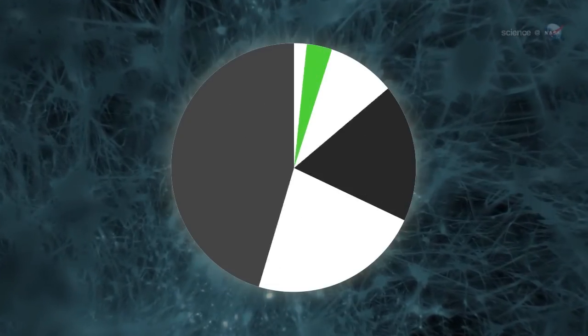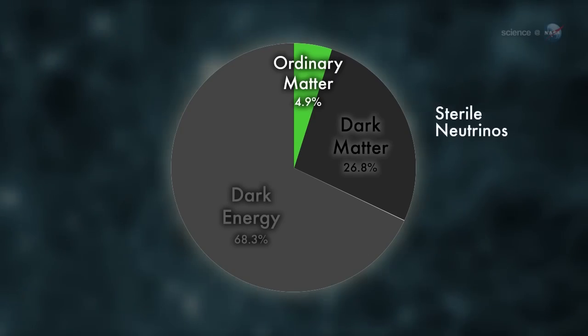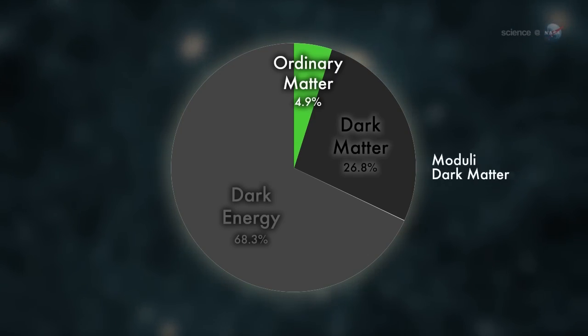The menagerie of dark matter candidates that might produce this kind of line includes axions, sterile neutrinos, and moduli dark matter that may result from the curling up of extra dimensions in string theory.